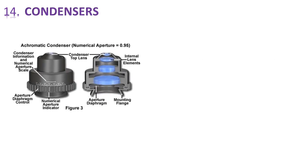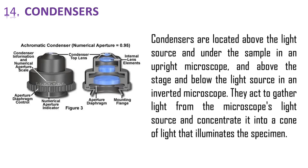And the 14th one is condensers. Condensers are available in different numerical apertures. They are a lens system which focuses the light to concentrate it into a cone of light that illuminates the specimen. Condensers are located above the light source and under the sample in an upright microscope, and above the stage and below the light source in an inverted microscope.